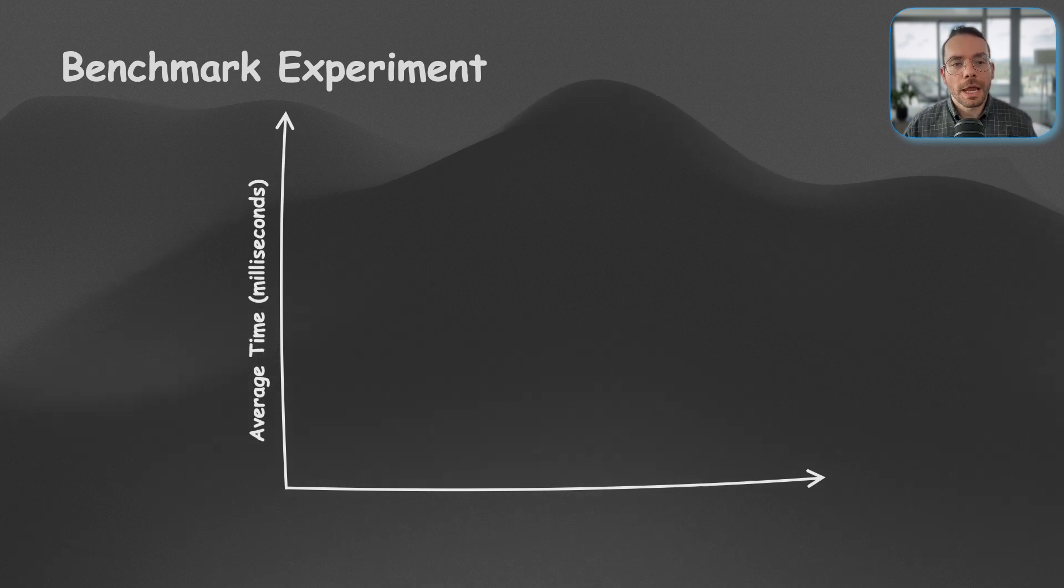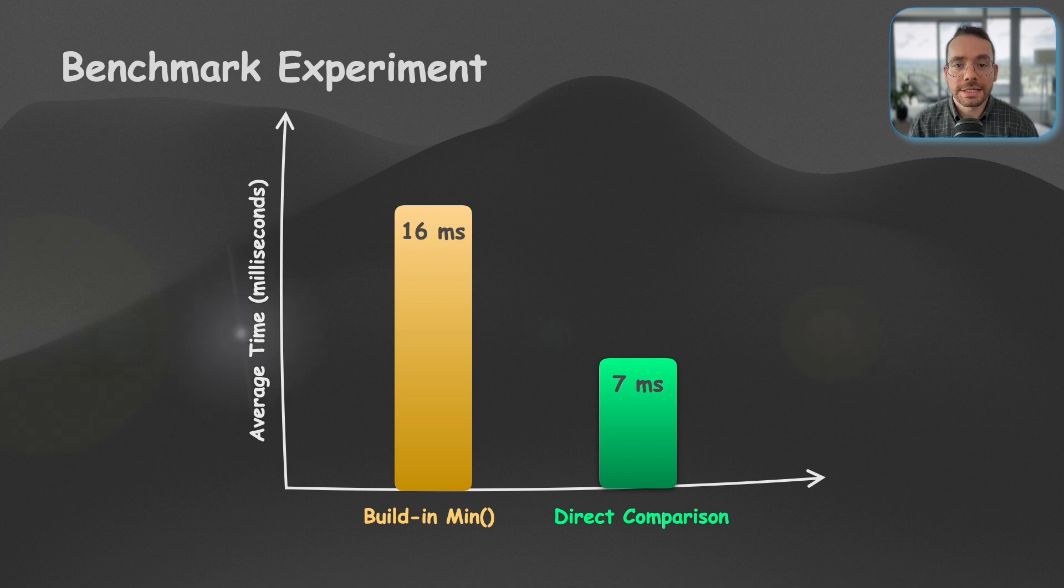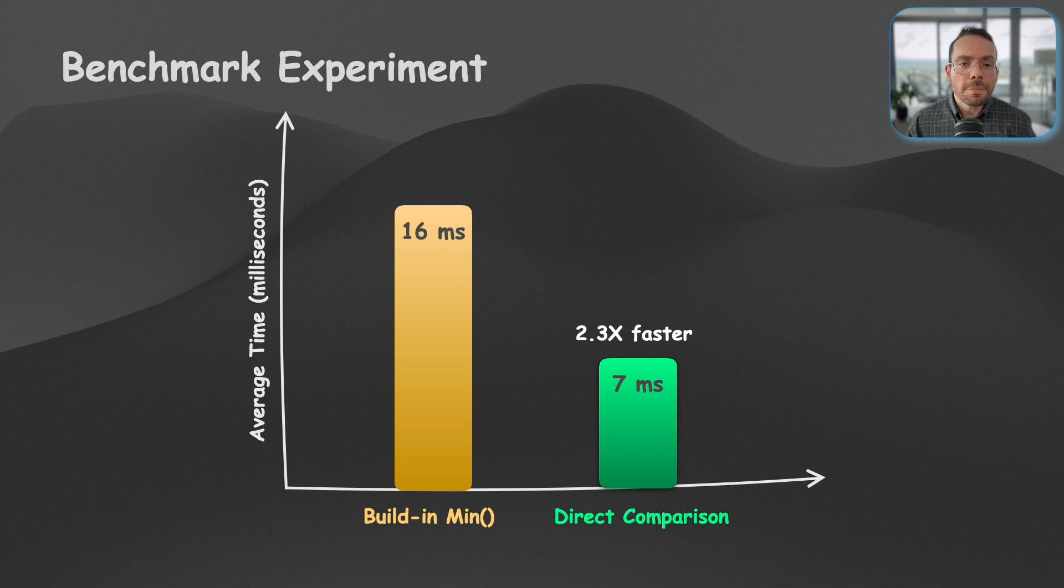So it turns out it will take the built-in function 16 milliseconds to find the min while the direct comparison approach did the exact same thing in 7 milliseconds. Interesting, right? The direct comparison is actually faster in this case.